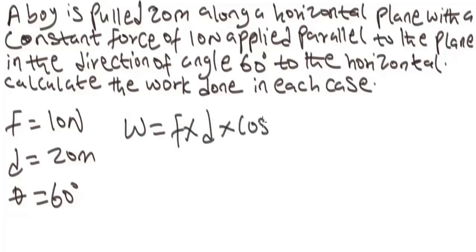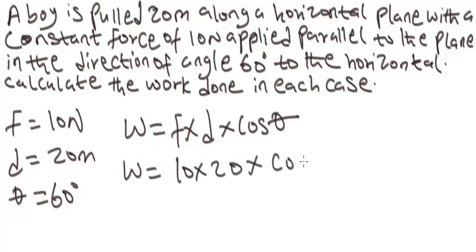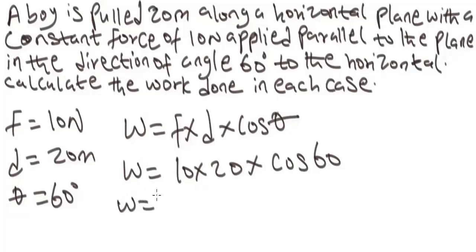To calculate the work done, we use W = force times distance times cos theta. So we have W = 10 times 20 times cos 60°. We use cosine because the angle is inclined to the horizontal. When the angle is inclined to the vertical, we would use sine. So the work done equals 100 joules.